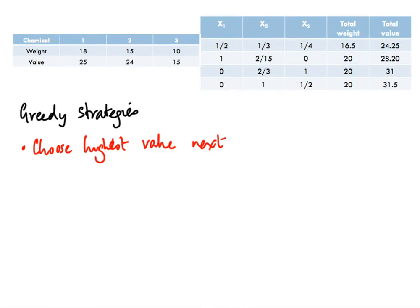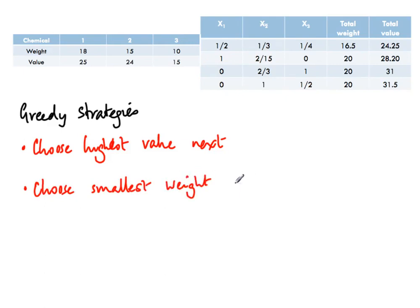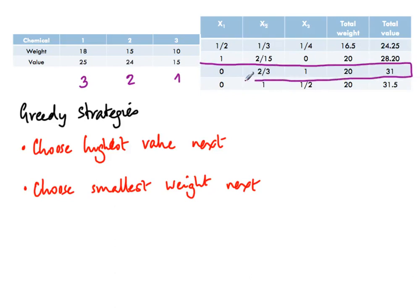Alternatively, to maximize the number of items we can fit, we fill in ascending order of weight — choose the smallest weight next. The smallest bag is chemical 3, then chemical 2, then chemical 1. This corresponds to setting X3 = 1, then taking as much of X2 as we can, with no room for X1. This is the third row in our table, and again it is not optimal.